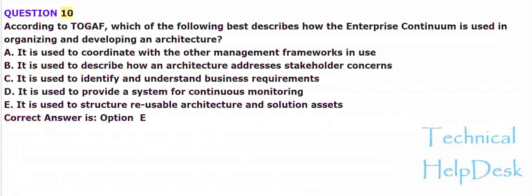Question 10. According to TOGAF, which of the following best describes how the enterprise continuum is used in organizing and developing an architecture? A. It is used to coordinate with the other management frameworks in use. B. It is used to describe how an architecture addresses stakeholder concerns. C. It is used to identify and understand business requirements. D. It is used to provide a system for continuous monitoring. E. It is used to structure reusable architecture and solution assets. Correct answer is Option E.